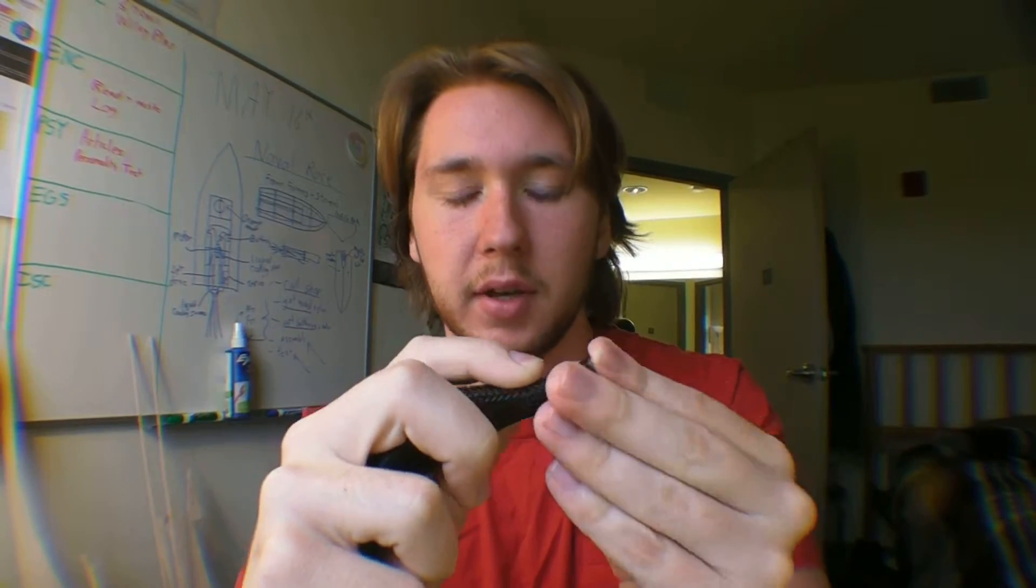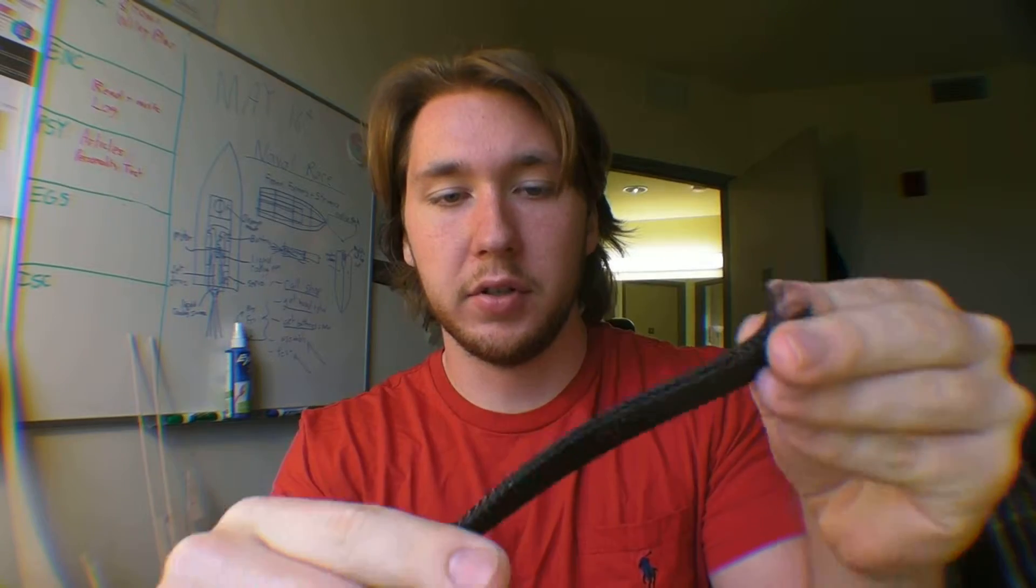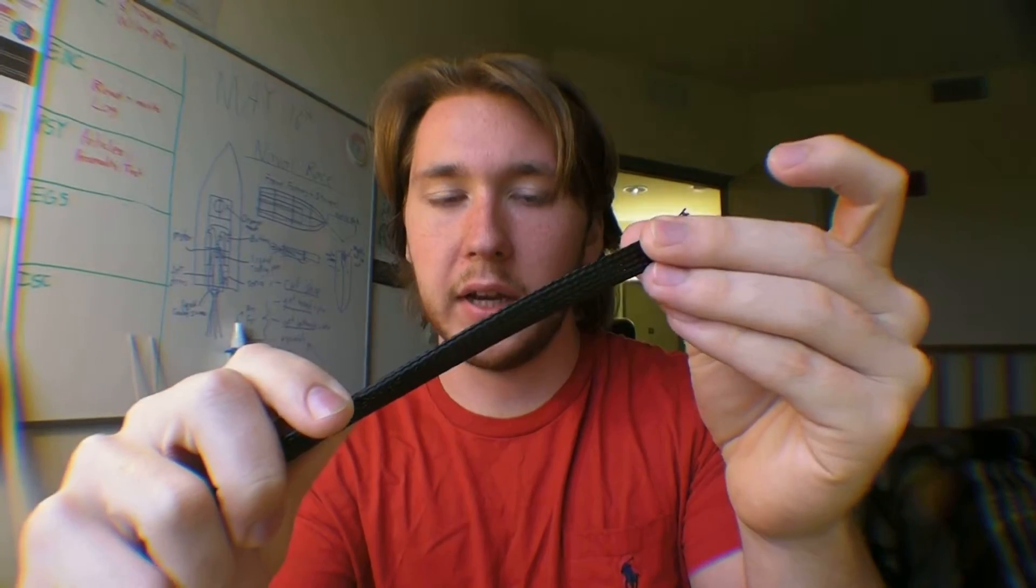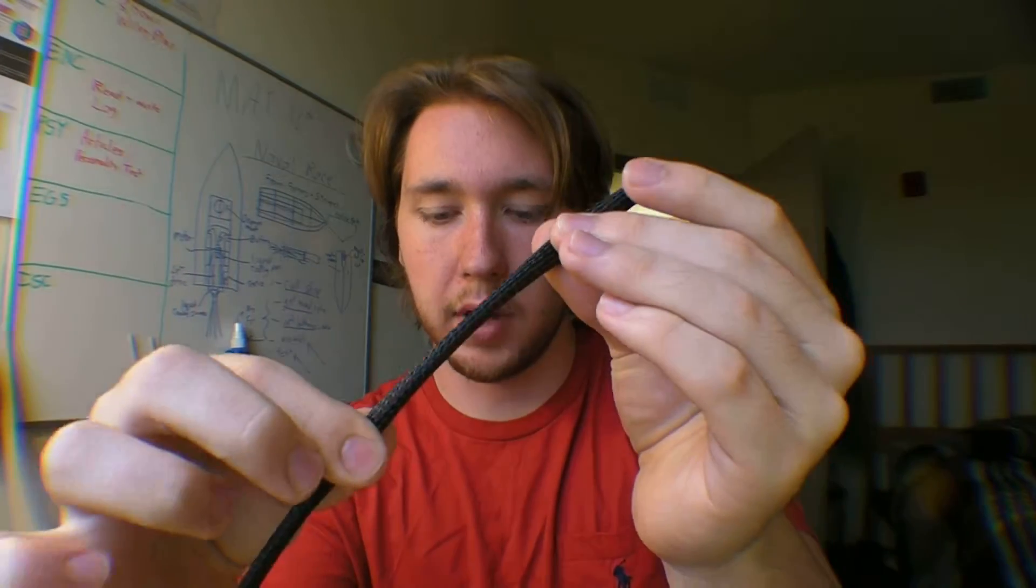It's like one of those finger traps kind of. You push, it expands. When you pull, it contracts. Same kind of thing. So what you're supposed to do is expand it, put your wires in, and then pull it tight, and it'll sheath the wires.